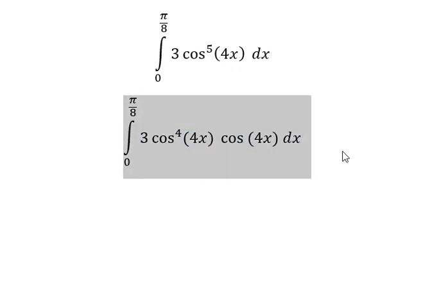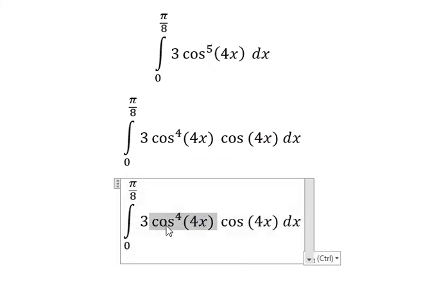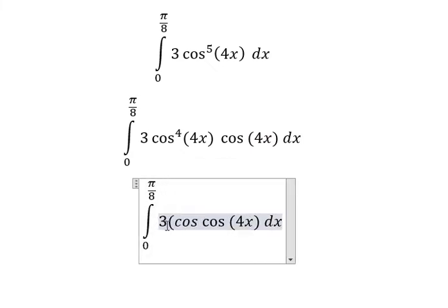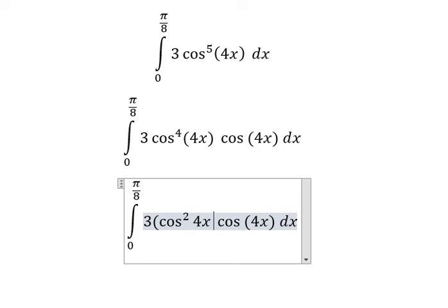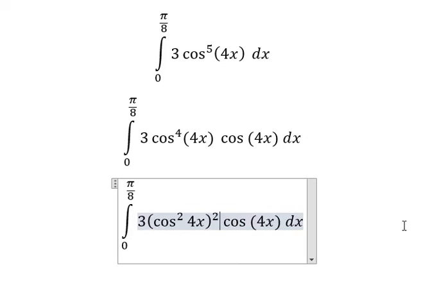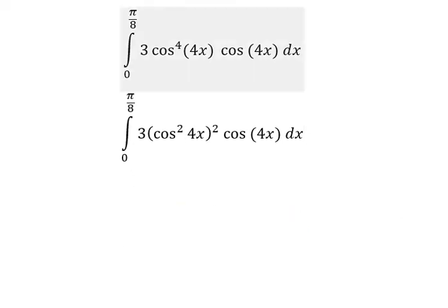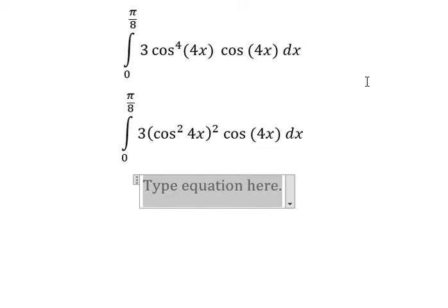Next, this one we can write as cosine 4x square to the power of 2 times cosine 4x. Next, we have the formula in here.